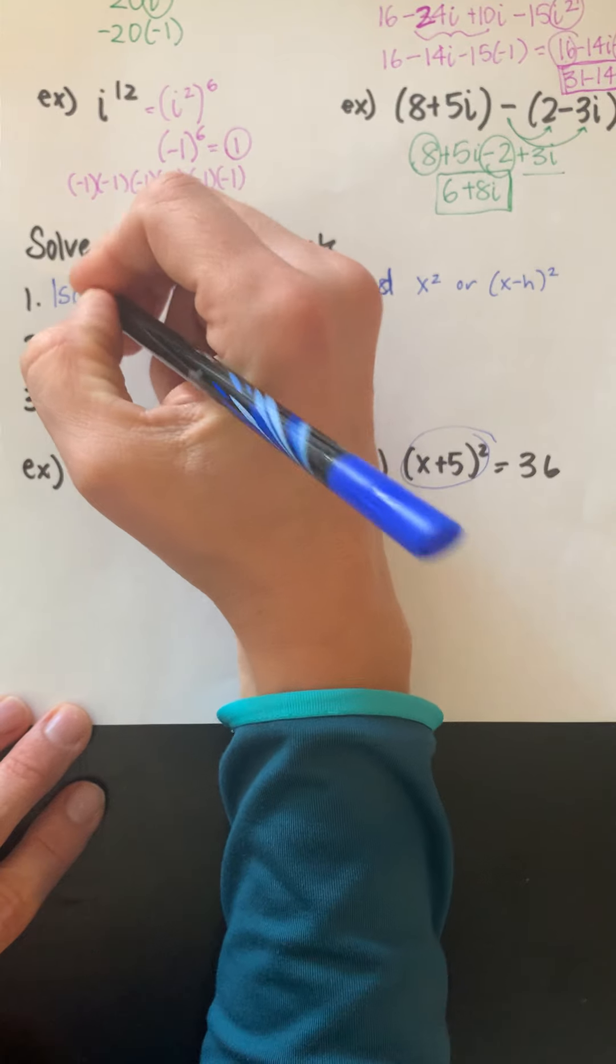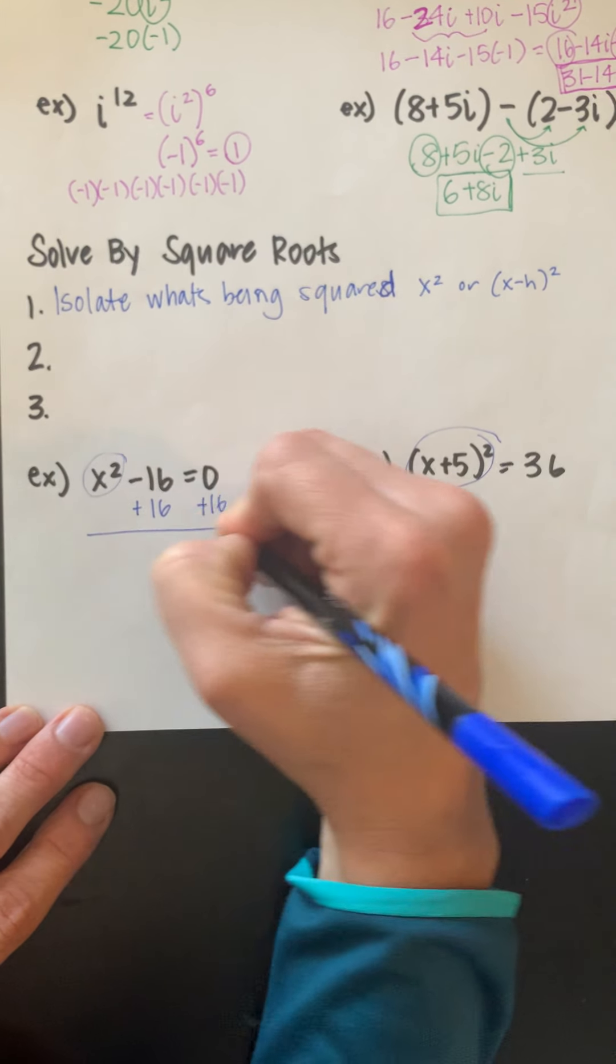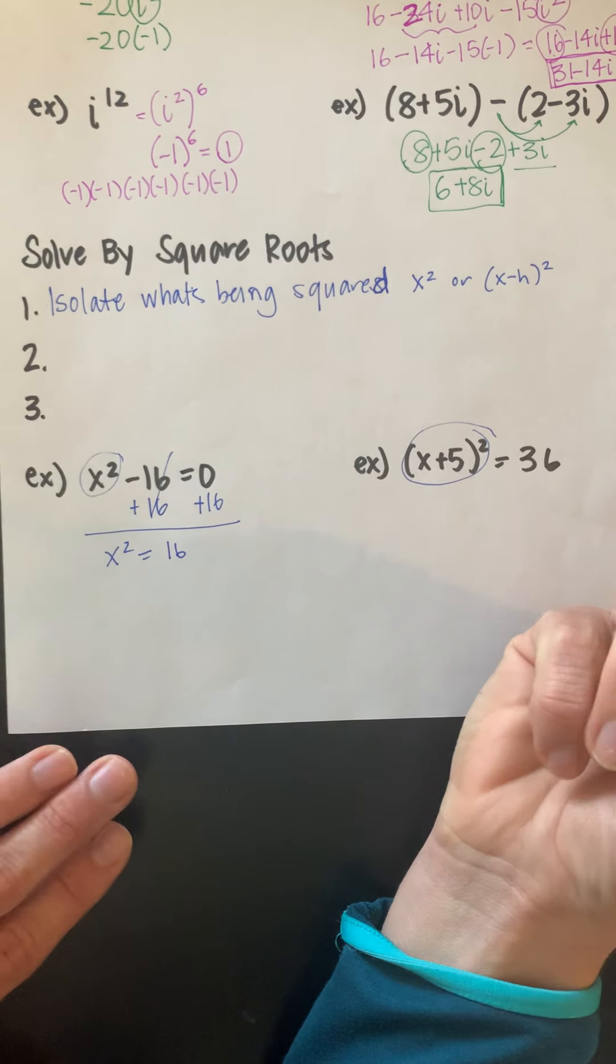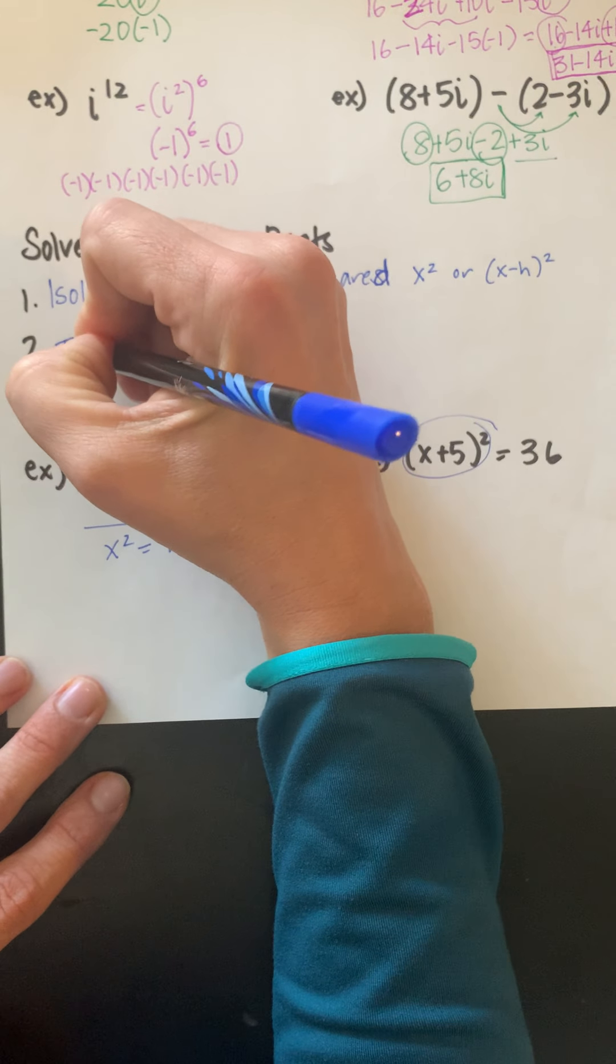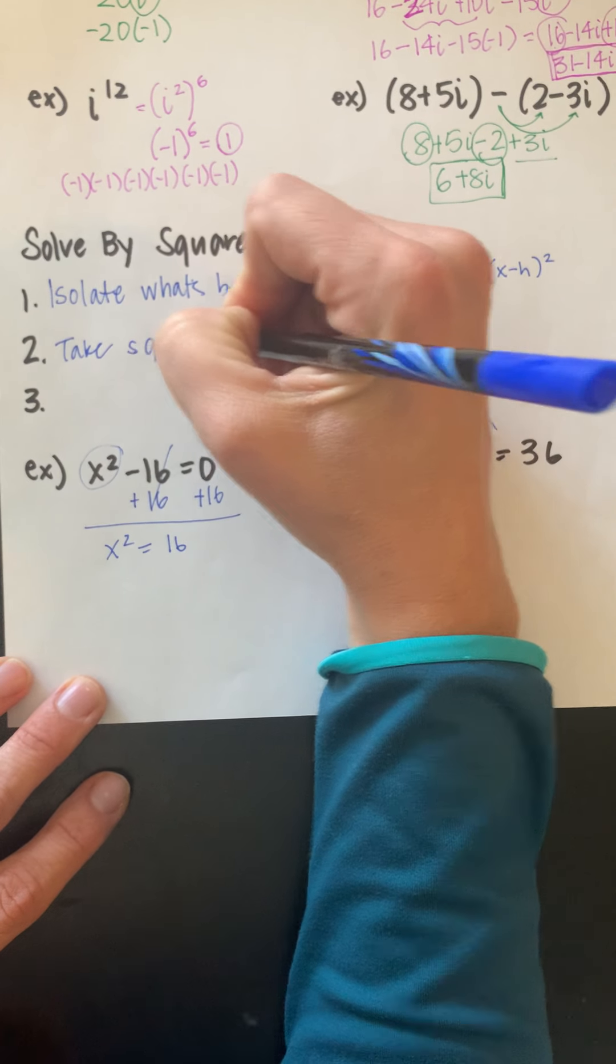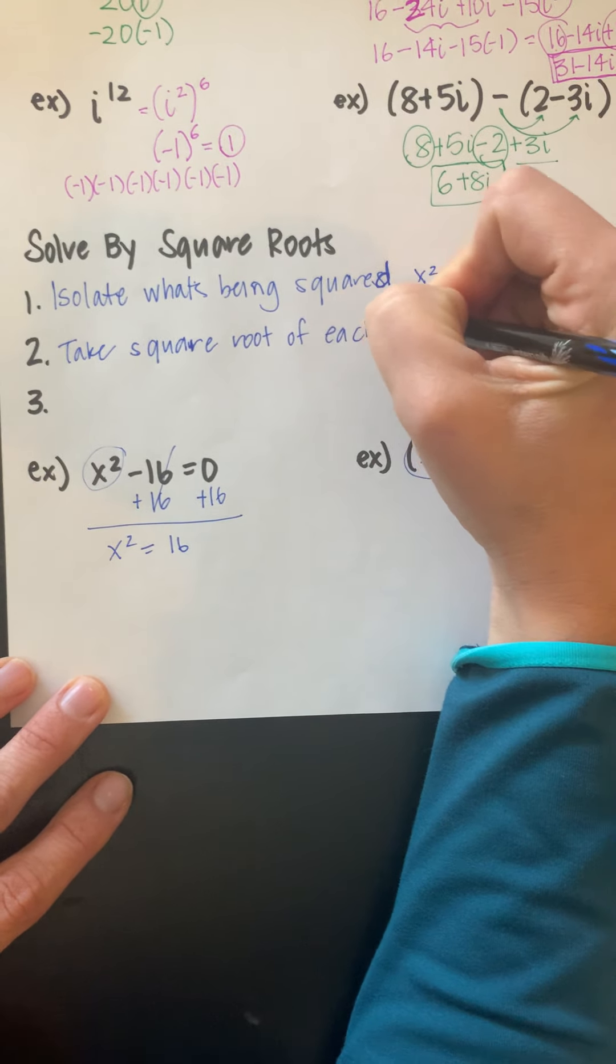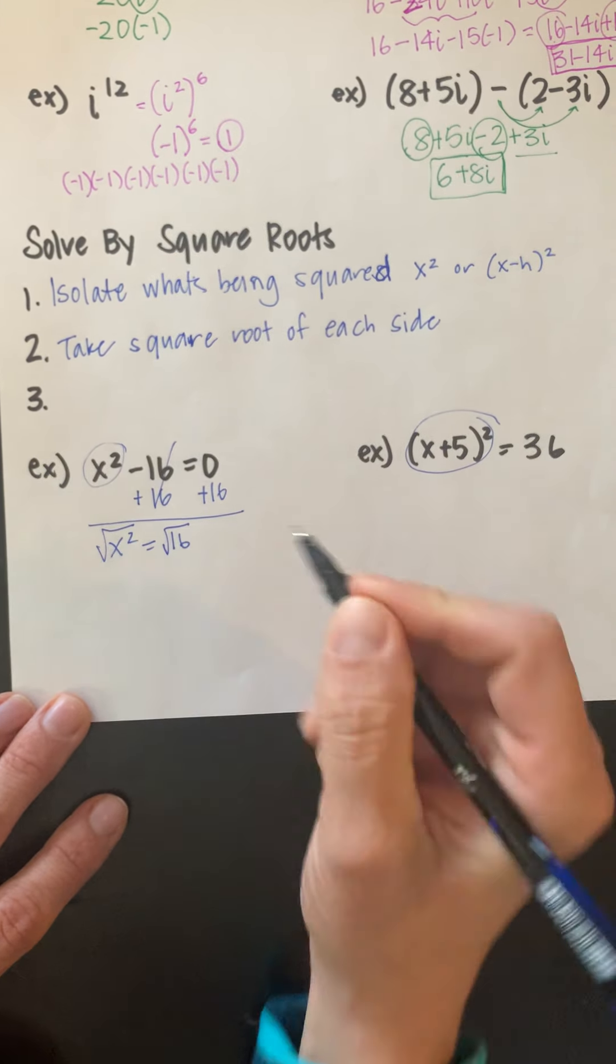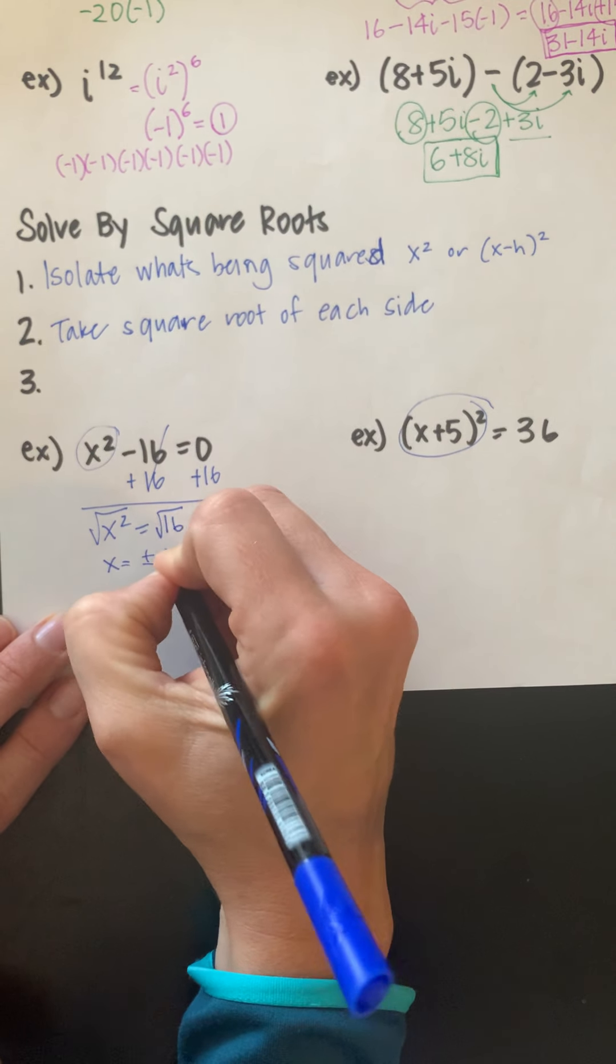0 and 16 is 16. So we isolate what's being squared. Now we're going to take the square root of each side. One of the things we have to remember when we're solving by taking the square root: when I take the square root of 16, there's actually two answers, both a positive and a negative 4.